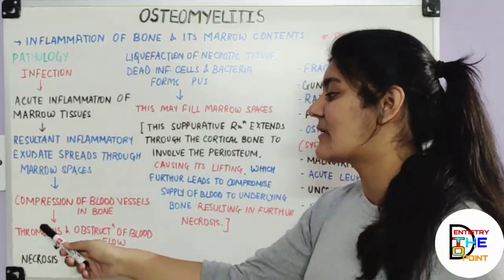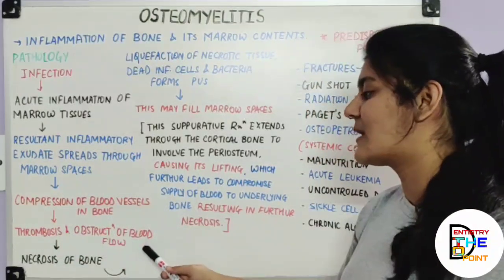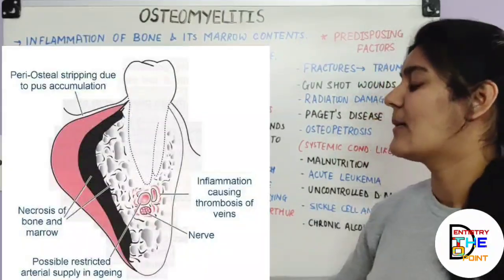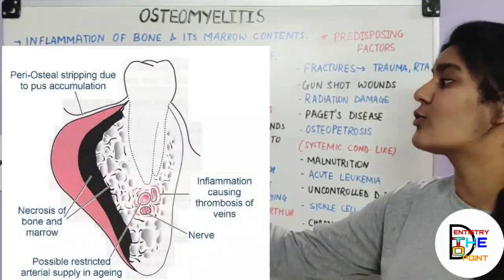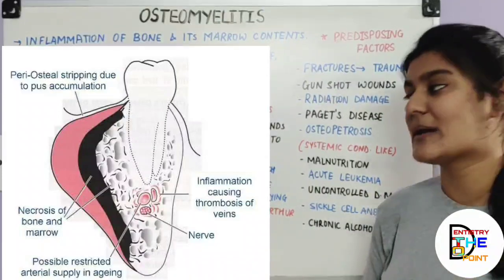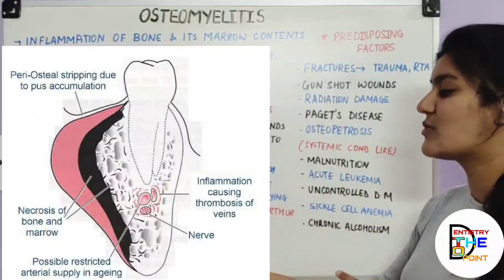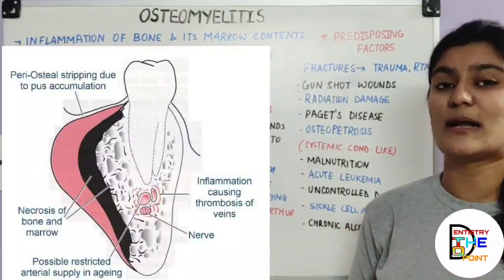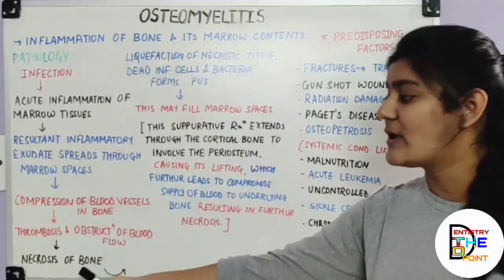Compression of the blood vessels leads to their thrombosis and obstruction of blood flow, causing necrosis of the bone. When there is obliteration or inflammation of the marrow spaces, the blood vessels are compressed, leading to thrombosis, obstruction of blood supply, and ultimately necrosis of the bone.